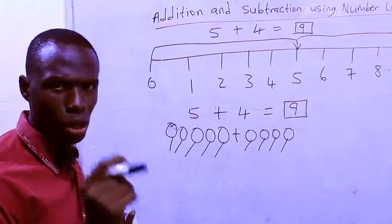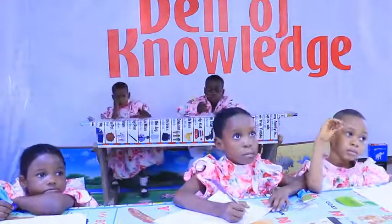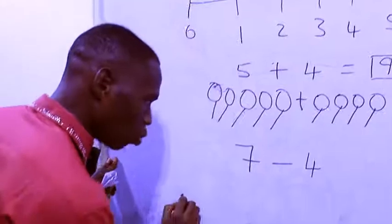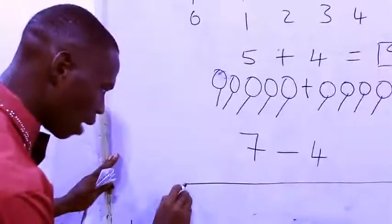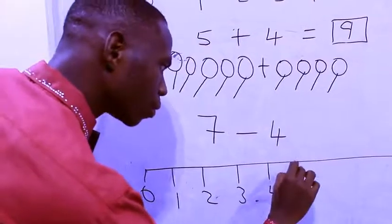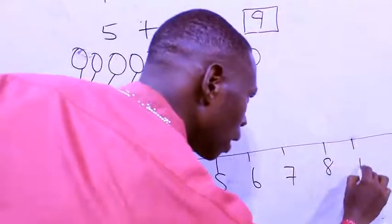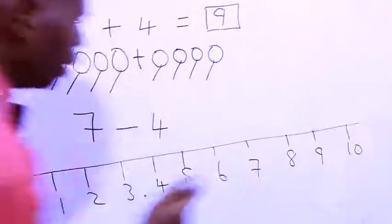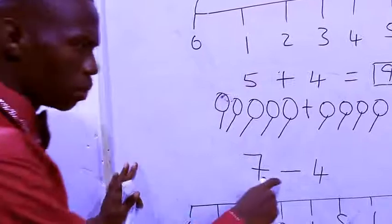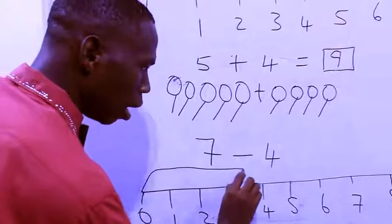Now let's move to subtraction using number line. Assuming we have seven minus four. In subtraction, let's draw a big line: zero, one, two, three, four, five, six, seven, eight, nine, ten. The first number is seven. Remember, the minus sign means remove. Get your number — this is seven. We target where seven is and drop our arrow there.